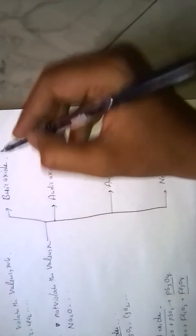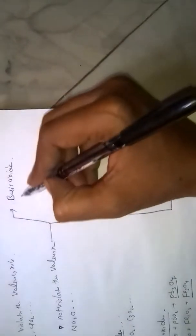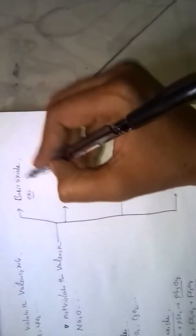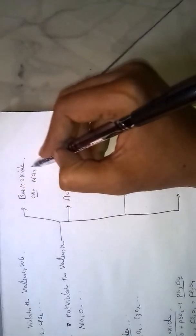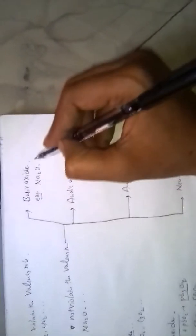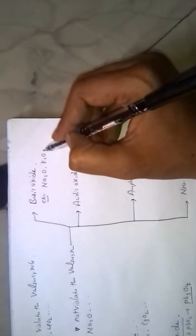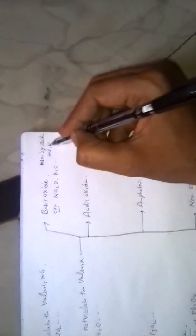Basic Oxides are formed by metals. Generally, metals form basic oxides. Examples of basic oxides are Na2O, K2O and so on. These are basic oxides. They are neutralized by acids such as HCl, H2SO4 and so on.